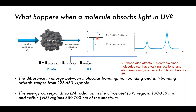Ideally, if we just had electronic transitions, we would have a sharp spectrum with sharp peaks. But due to the reality of the situation — molecules vibrating, rotating — we get a broad band observed. The difference in energy between molecular bonding, non-bonding, and anti-bonding orbitals ranges from 125 to 650 kilojoules per mole. This energy corresponds to electromagnetic radiation in the ultraviolet region (100 to 350 nanometers) and visible region (350 to 700 nanometers) of the spectrum.